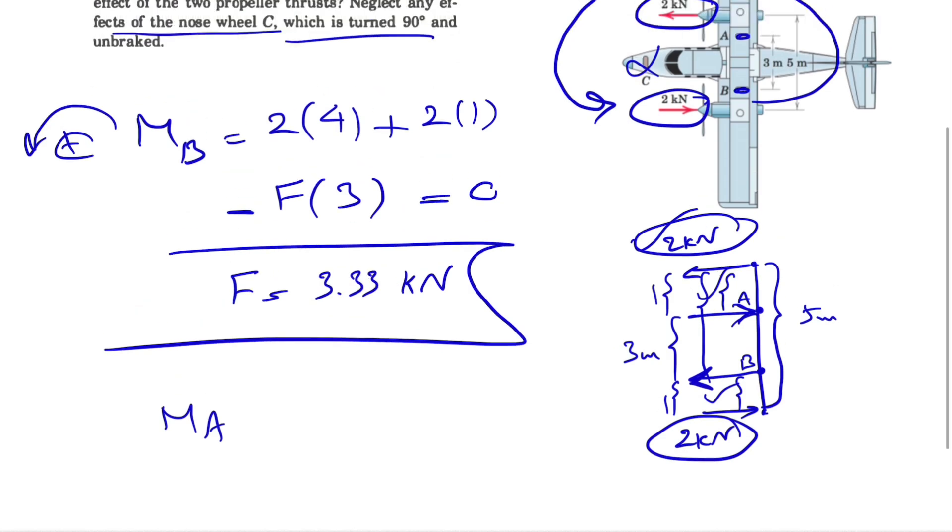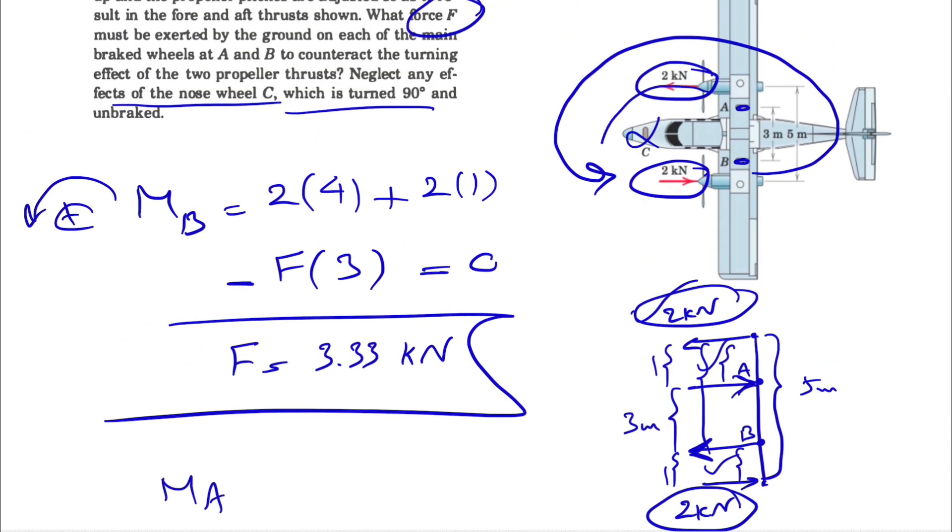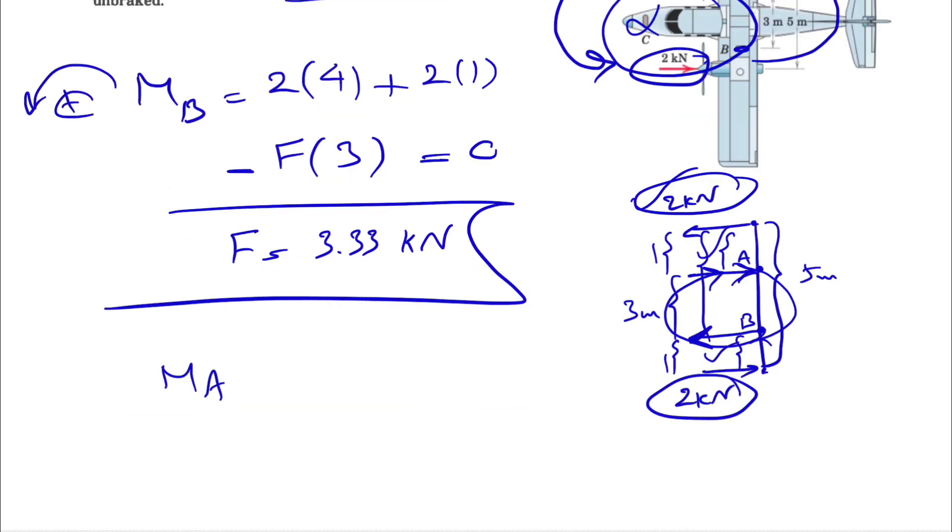From the other way that I mentioned at the very beginning, we have the couple that is produced by these two forces. We have to make another couple by these two in a clockwise direction in order to cancel out the other two. So again, this is the right direction for the force at A and B, and the magnitude that we have for F will be 3.33 kilonewtons, and that would be the final answer for this question.